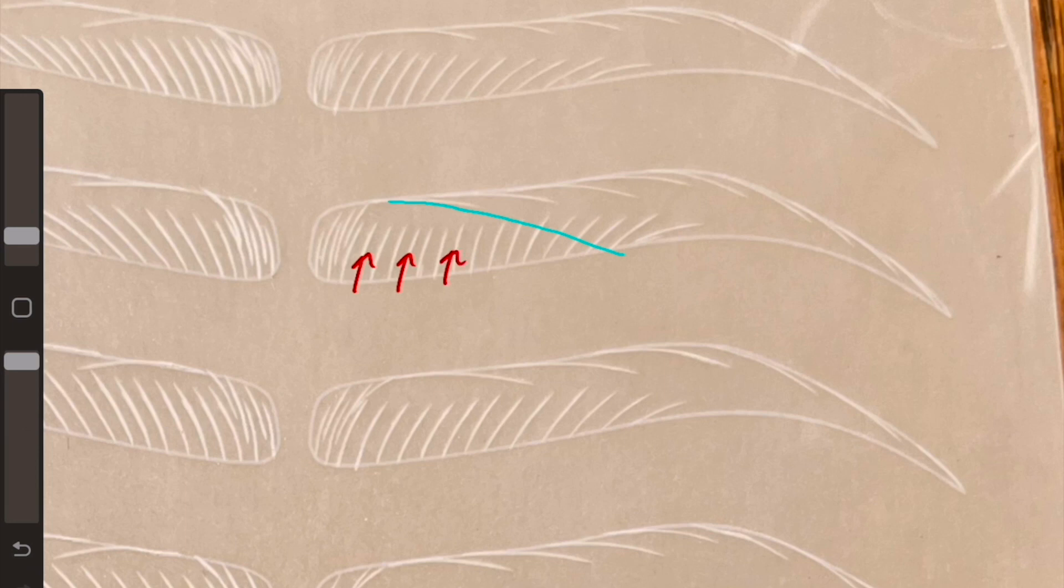In this example you can see how the direction of the blade never changed. The blade started in the same direction every time up.